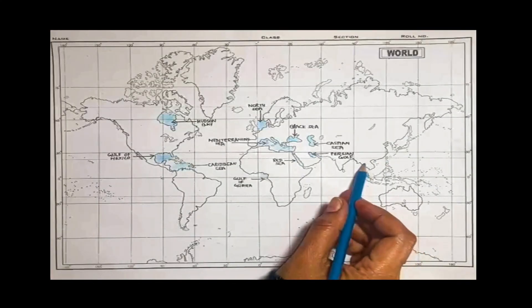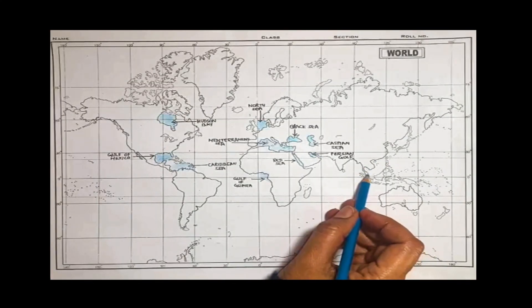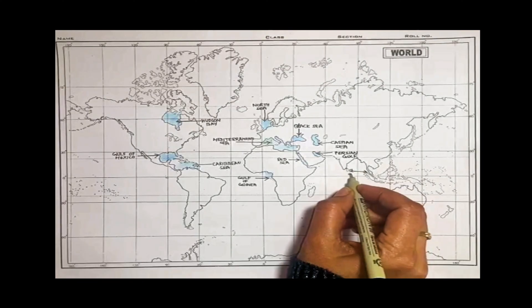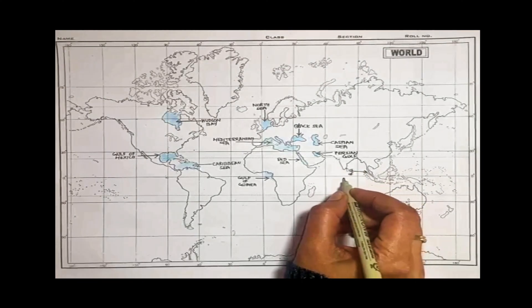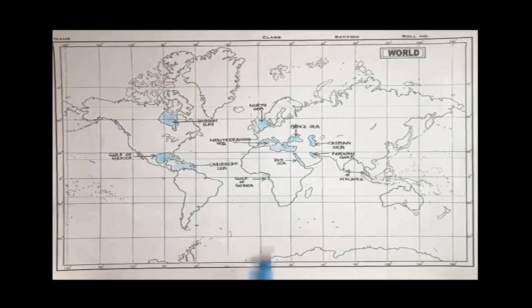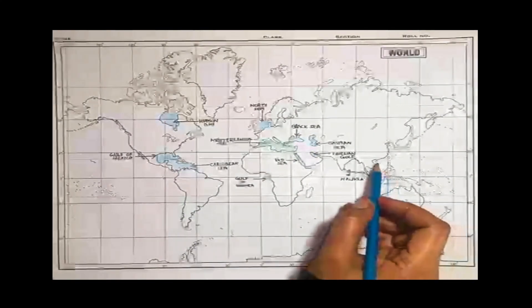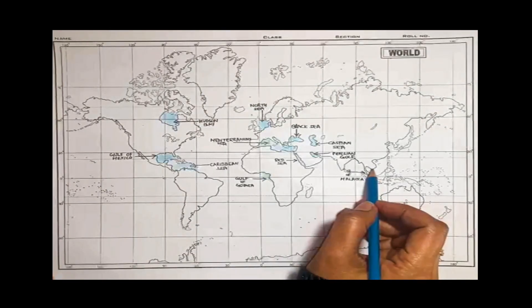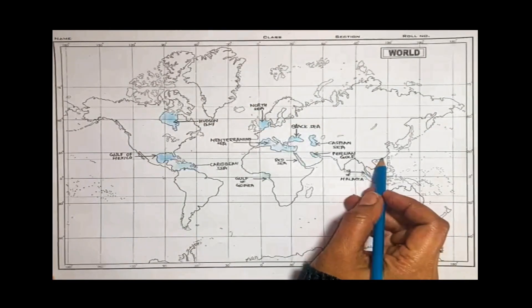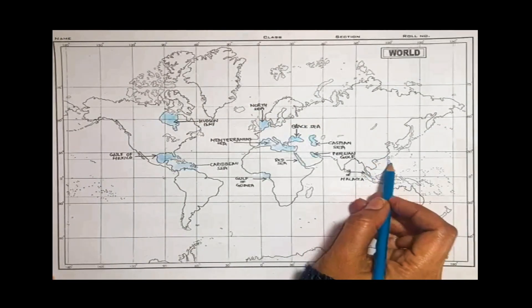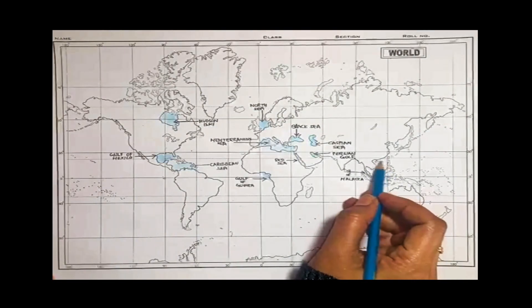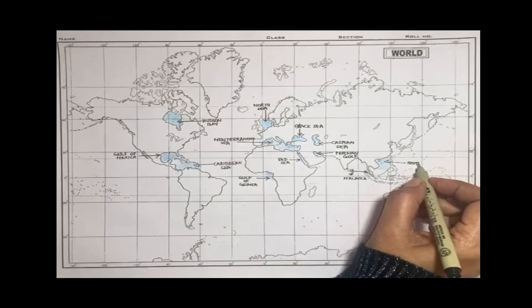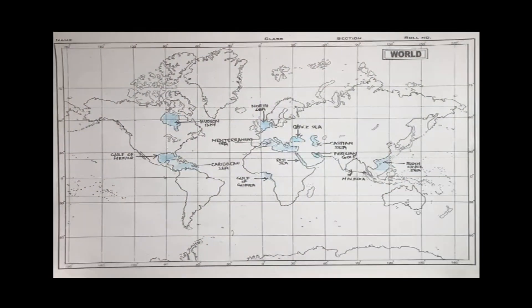Yeh island aur yeh Asia ka portion hai — in between blue kar dena hai. This is your Strait of Malacca. Thoda upar chalte hain — yeh design, say start karke yahan tak, aur yeh design ka yahan tak — this whole portion you will color, and this will become South China Sea.